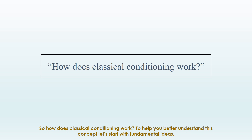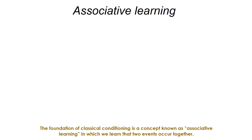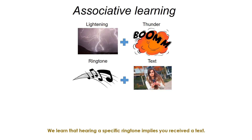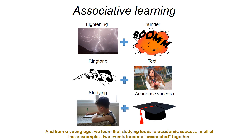So how does classical conditioning work? The foundation of classical conditioning is a concept known as associative learning, in which we learn that two events occur together. We learn that seeing lightning in the distance will lead to a thunderous boom in a few seconds. We learn that hearing a specific ringtone means we're about to receive a text. And from a young age, we learn that studying leads to academic success. In all of these examples, two events become associated together.